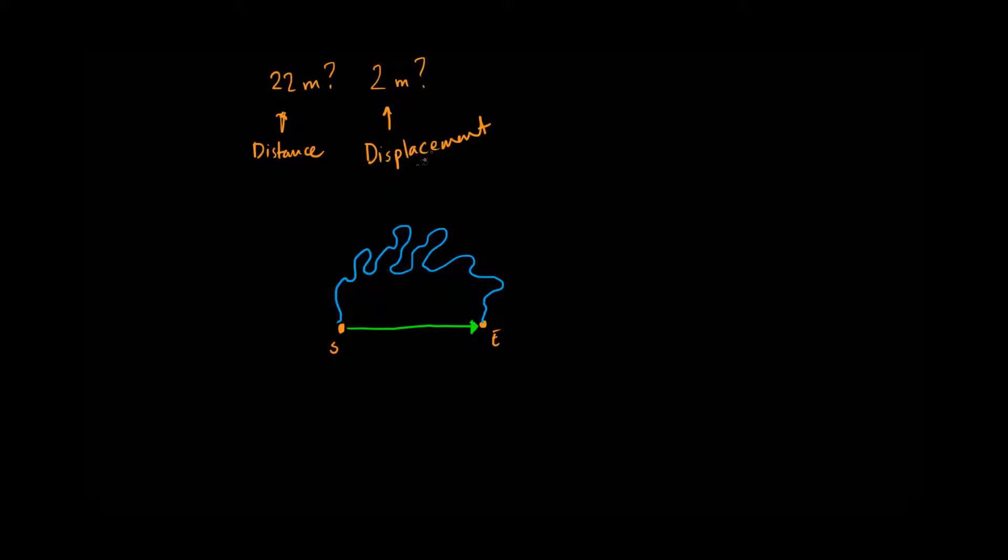Displacement, on the other hand, displacement is both a distance and a direction. So, I can say I traveled 2 meters to the right in the above example. I can say I traveled 10 meters east, for example.